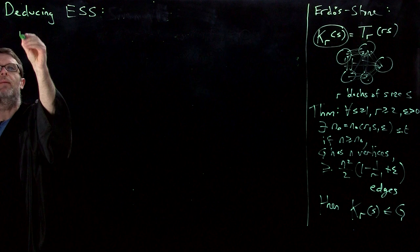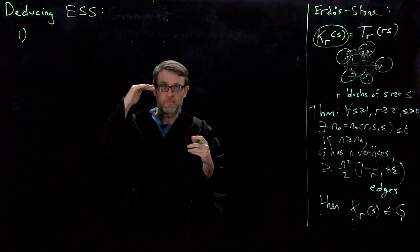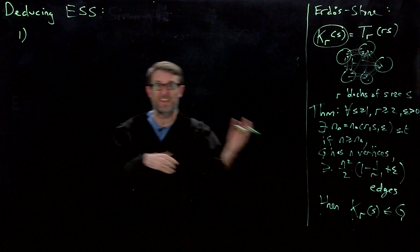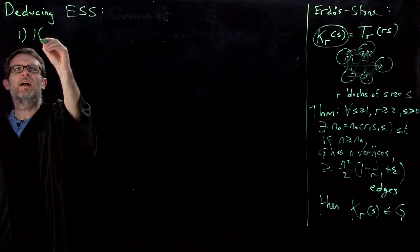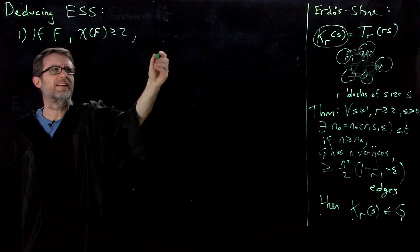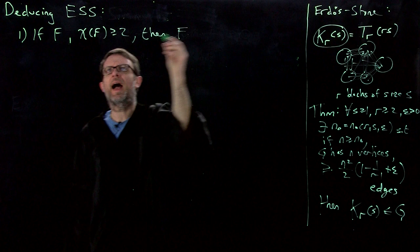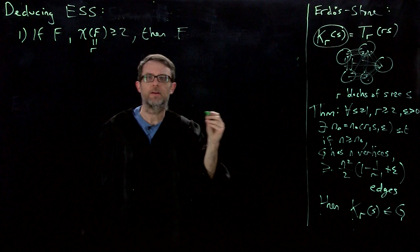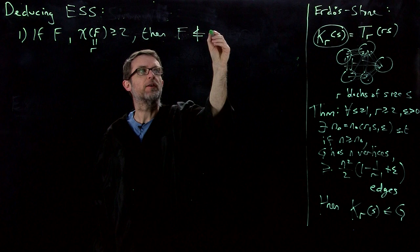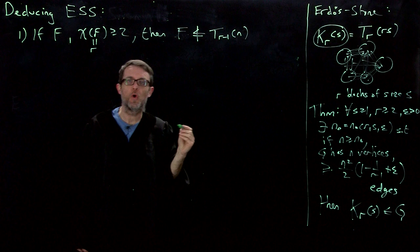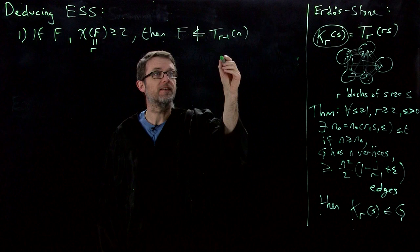Let's deduce the Erdős-Stone-Simonovits theorem from the Erdős-Stone theorem. There are two points to make, because the theorem says the limit of ex(n,F) over n-choose-2 equals something — so I need to show it's less than or equal to that something, and also bigger than or equal to the same thing. If you give me an F with chromatic number at least 2, say the chromatic number is r, then the first observation is that F cannot appear as a subgraph in the Turán graph that has only r minus 1 partition classes.